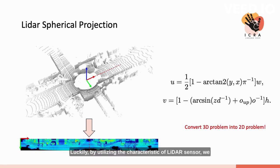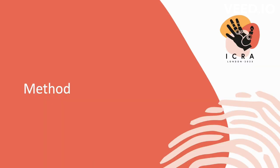Luckily, by utilizing the characteristics of LIDAR sensor, we can use LIDAR spherical projection to convert a 3D LIDAR scan into a 2D projection map. Next, I will present our methods.